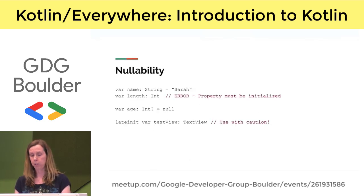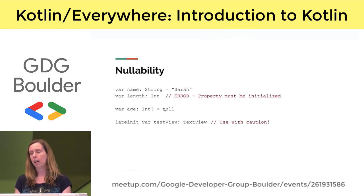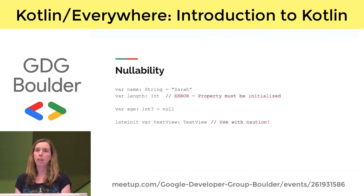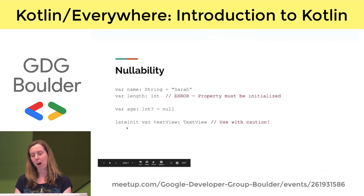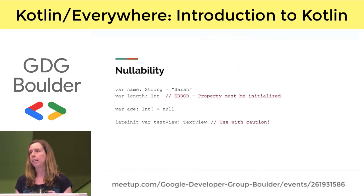Nullability is one of Kotlin's most important features. All objects are non-nullable by default, so if you declare a string, you must give it a value right away so it's never in a null state. If you want a nullable type, you put a question mark after it. You can also use lateinit, which is a promise to the compiler that you're declaring a non-nullable value and will give it a value before you use it. The most common use of lateinit is declaring views as class member variables in an activity, since they won't have a value until onViewCreated is called.